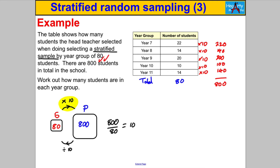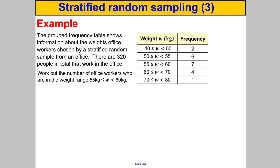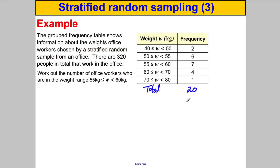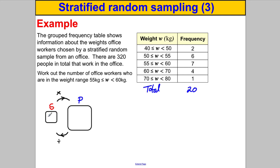Next question — pause and have a go. A grouped frequency table shows the weights of office workers chosen by stratified random sample. There are 320 people in total in the office. We're asked to find the number of office workers in the weight range 55 to 60. First, add up the sample values to get a total of 20 in the sample. Drawing our picture: sample = 20, population = 320. 320 divided by 20 equals 16, so the population is 16 times bigger.